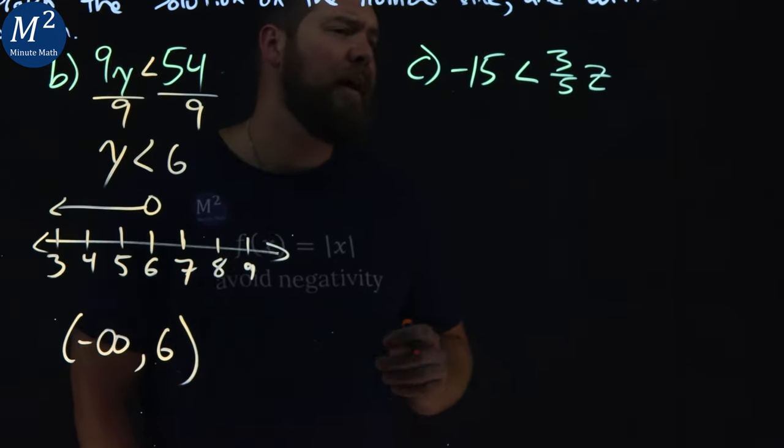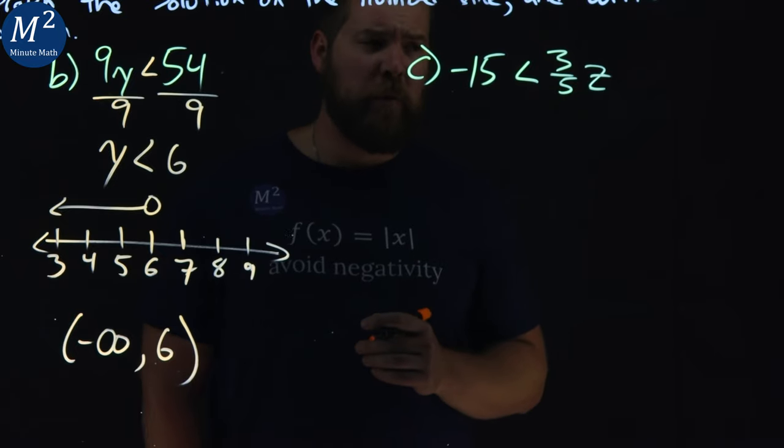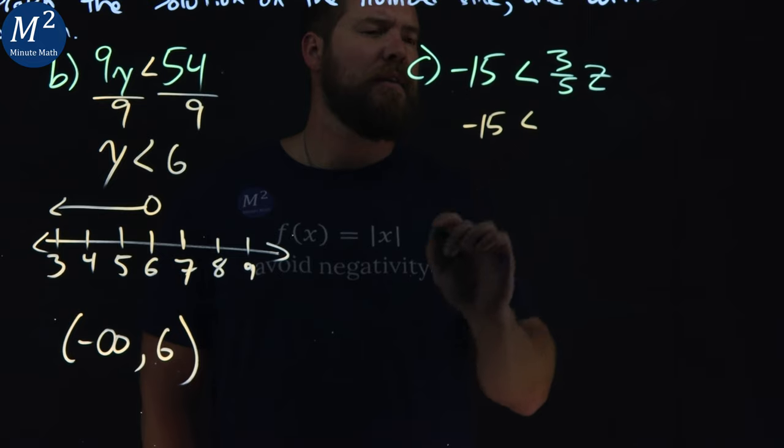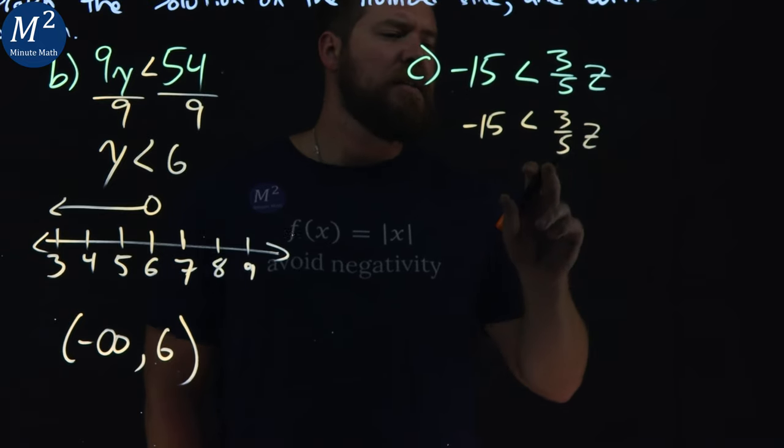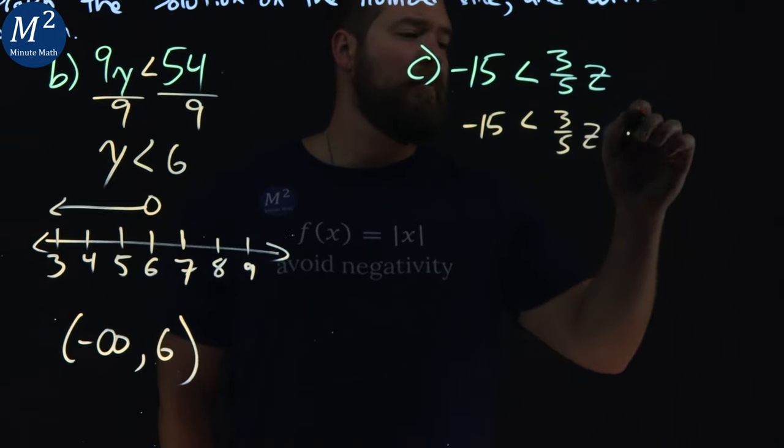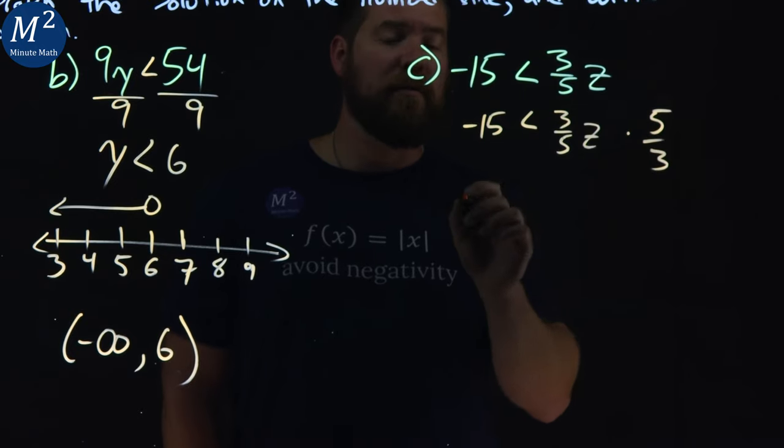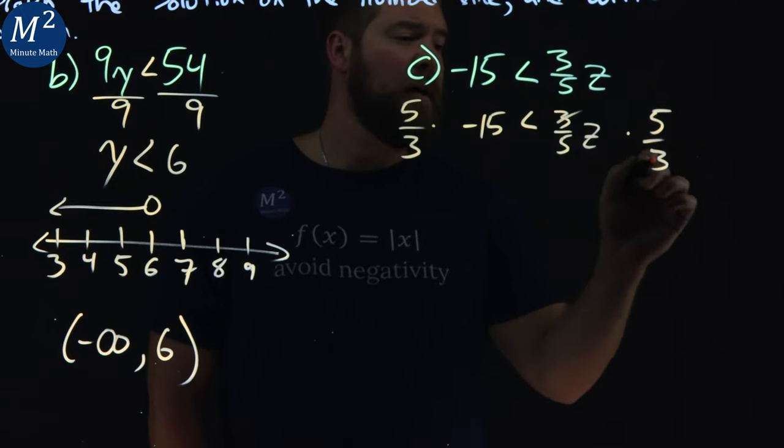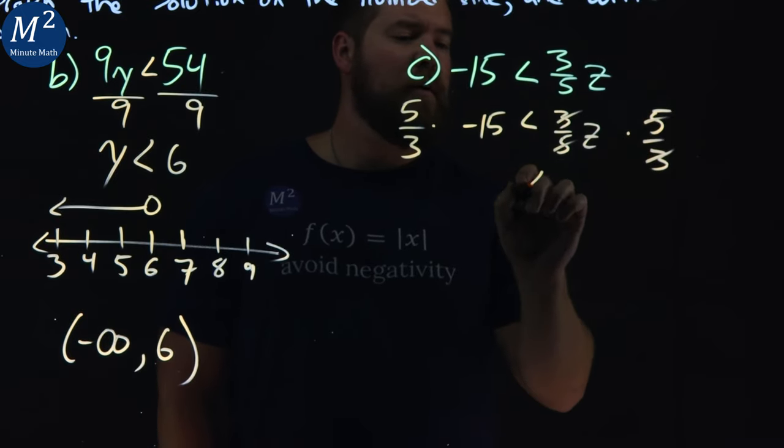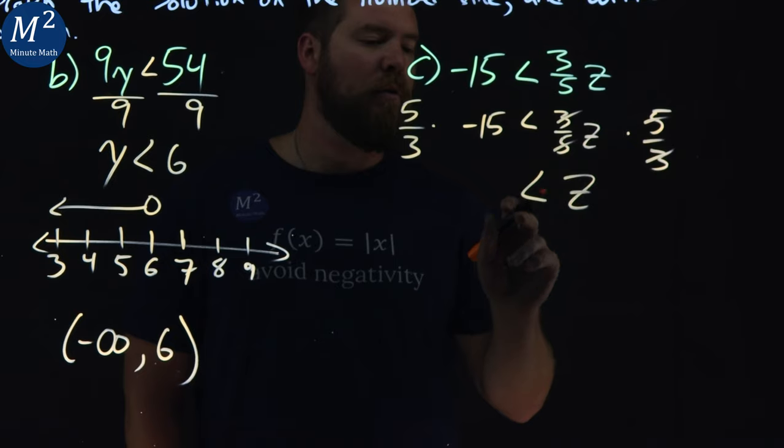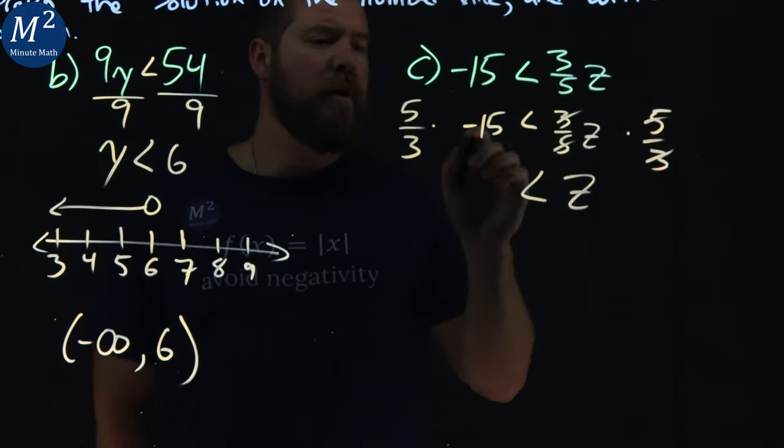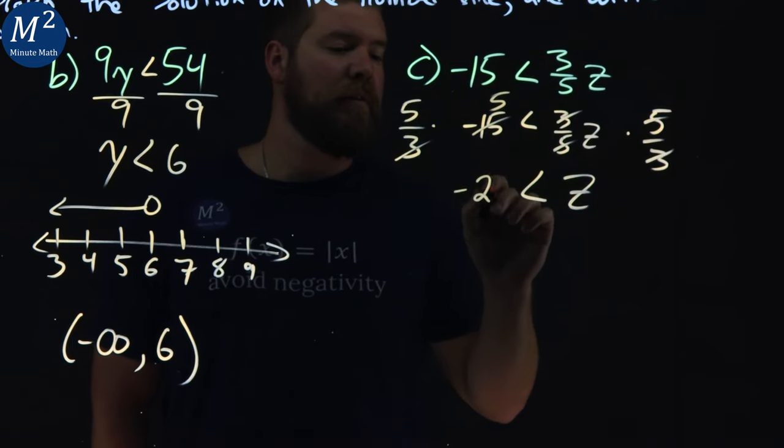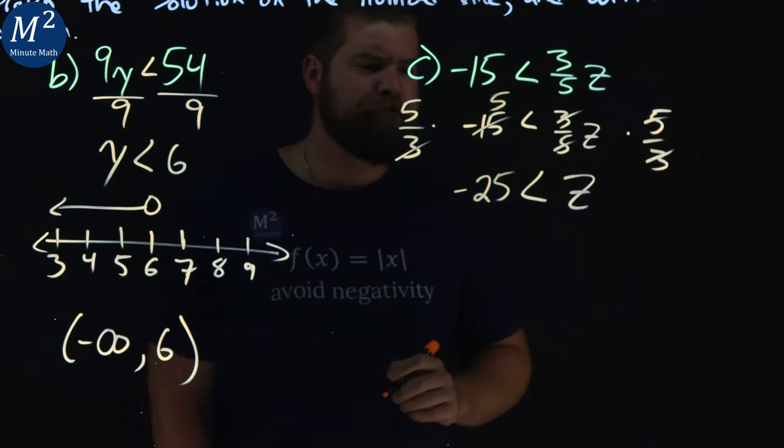Lastly here, we want to get z by itself. And to get z by itself, I'm going to rewrite this. -15 is less than 3 fifths z. To get rid of the 3 fifths, I want to multiply this by 5 thirds, the reciprocal here. 5 thirds on the right-hand side, 3s cancel, 5s cancel. And we have z by itself, inequality comes down. 3 goes into 15 five times. And 5 times a negative 5 is a negative 25.